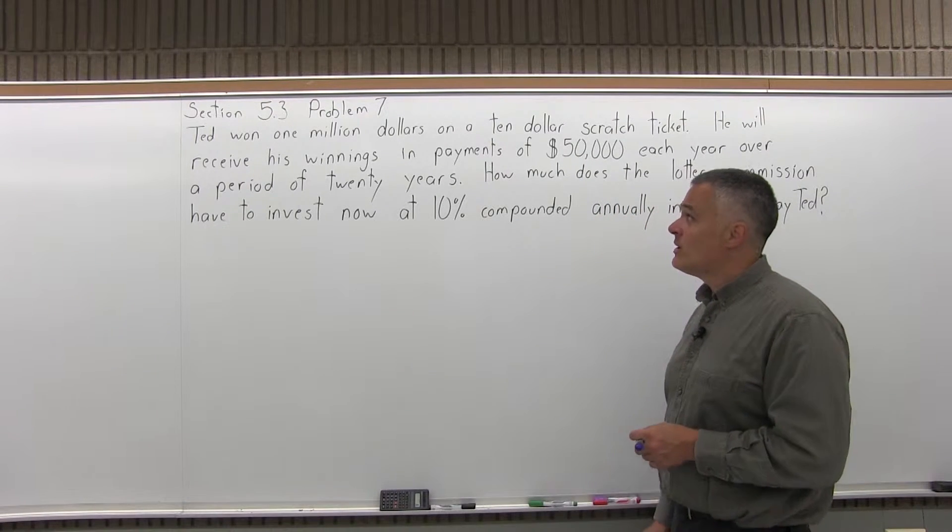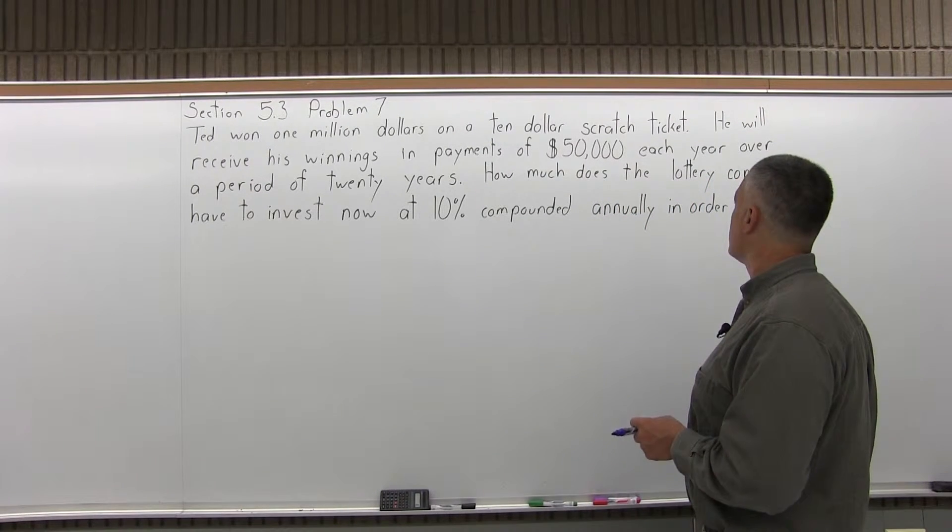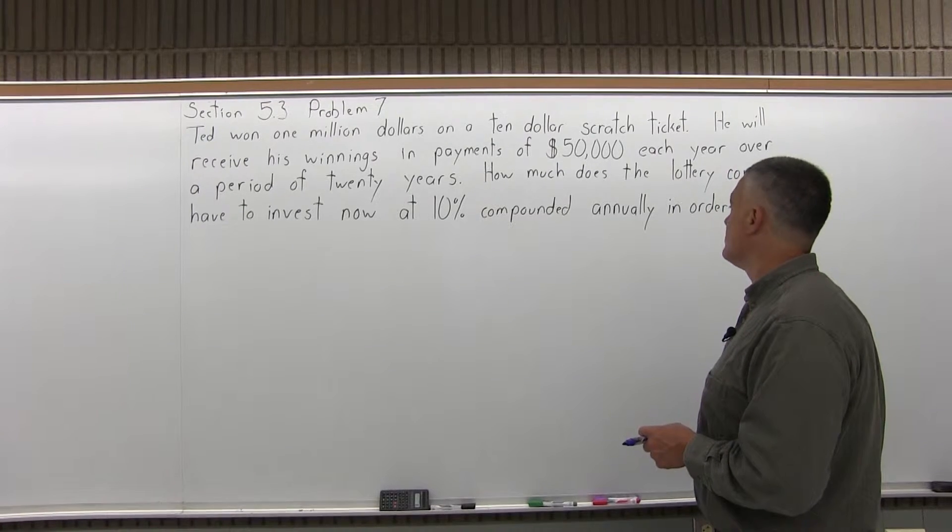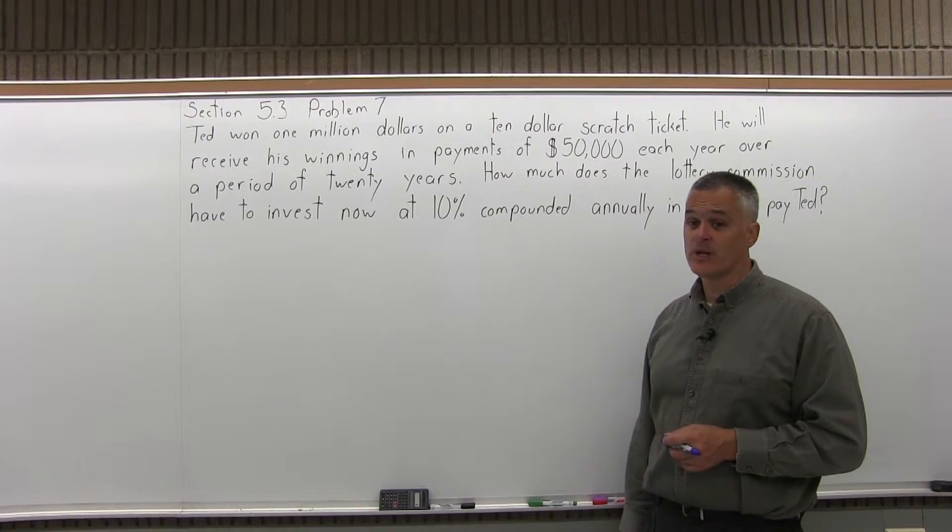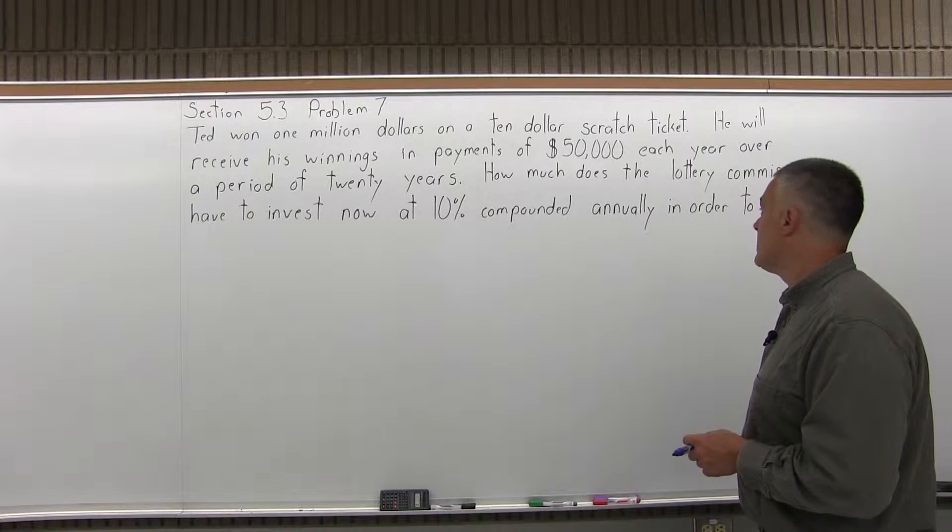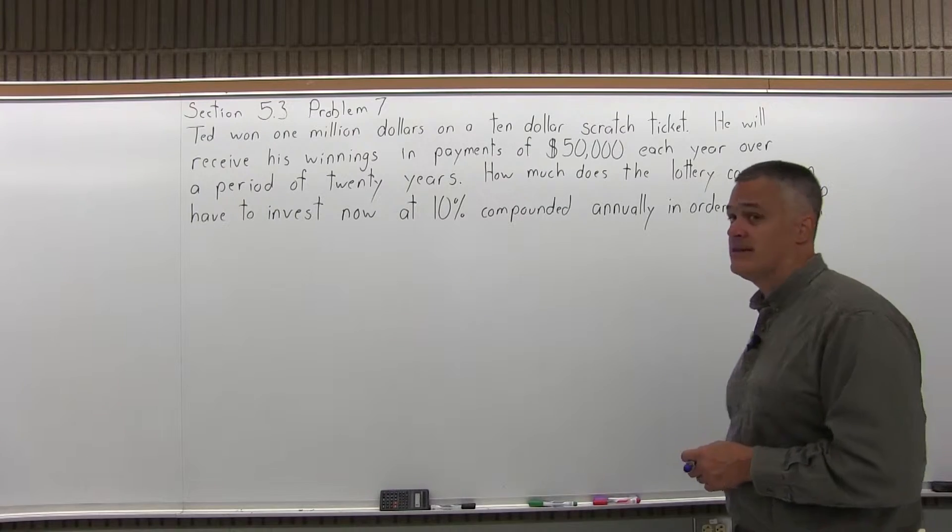It says Ted won $1 million on a $10 scratch ticket. He will receive his winnings in payments of $50,000 each year over a period of 20 years. How much does the Lottery Commission have to invest now at 10% compounded annually in order to pay Ted?